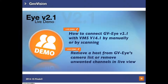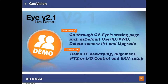For the second live demo, we will show you how to remove a host from GVI's camera list or remove unwanted channels in live view. The third demo will cover GVI settings such as default ID and password, so you can pre-define your IP camera's credentials. We will also show how to delete the camera list and upgrade. The final demo covers the fisheye dewarp feature, alignment, PTZ or IO control, and ERM setup.